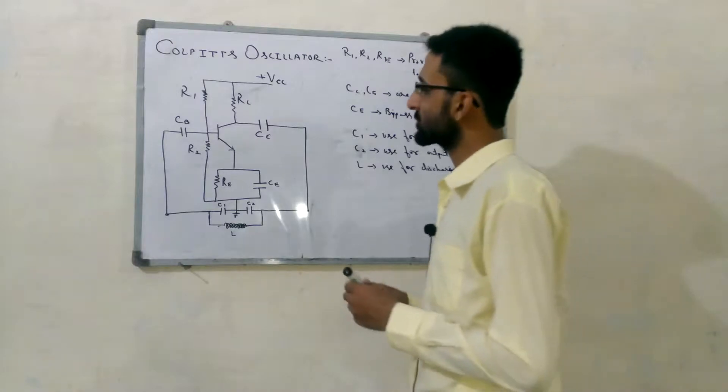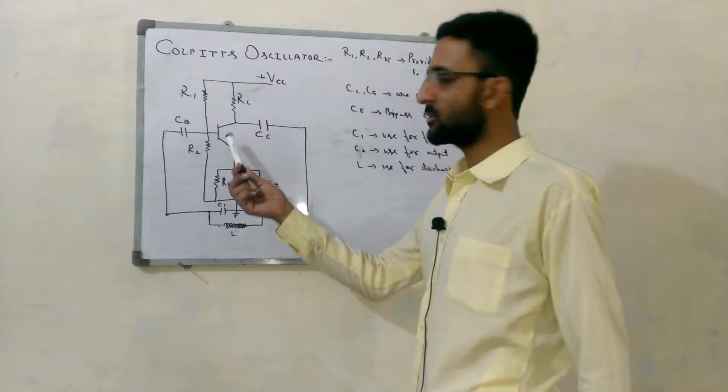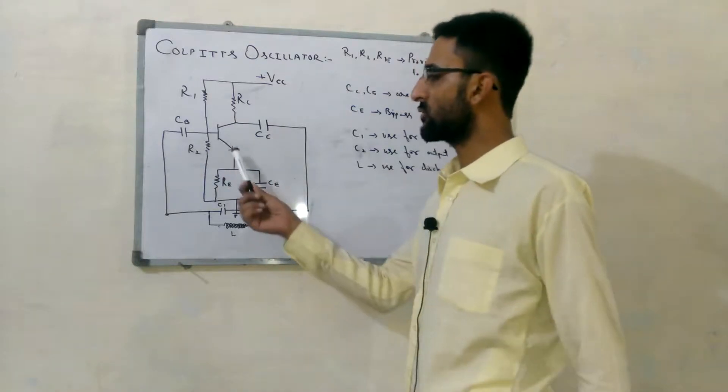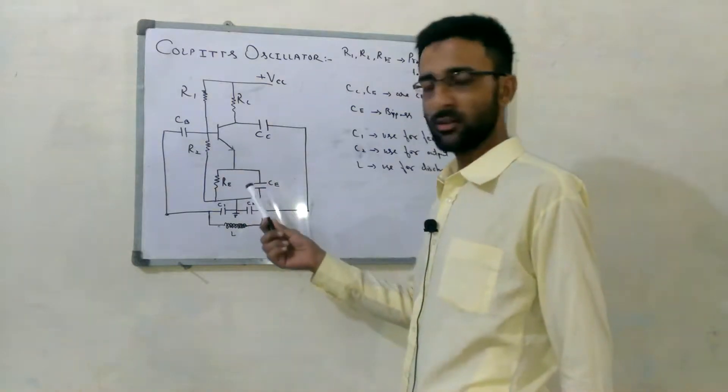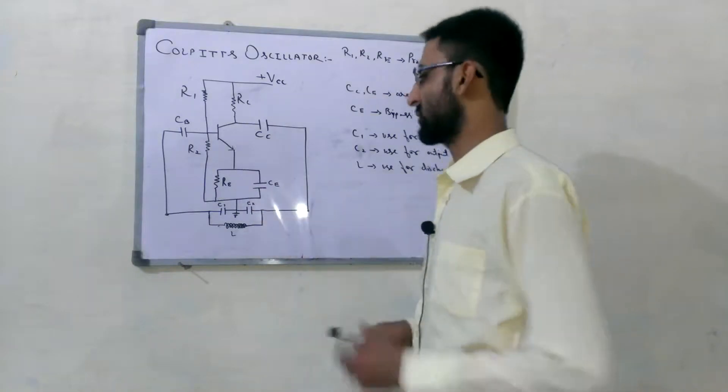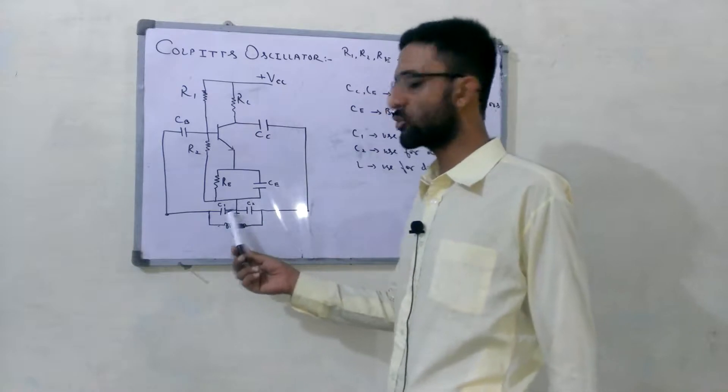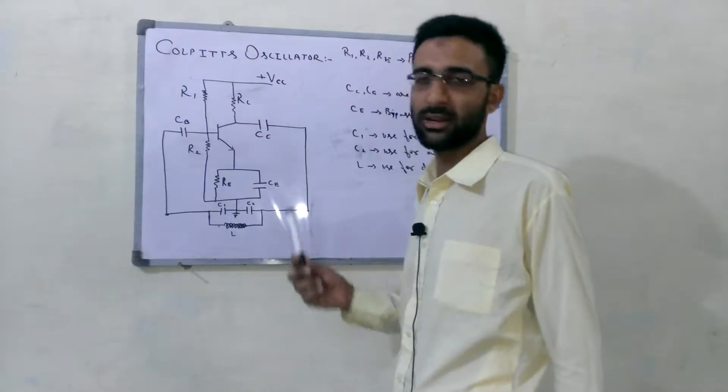In this circuit, we have to use an NPN transistor which is common emitter. That is called common emitter NPN transistor, and a feedback circuit consisting of two capacitors and one inductor.